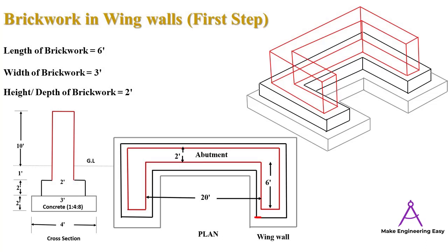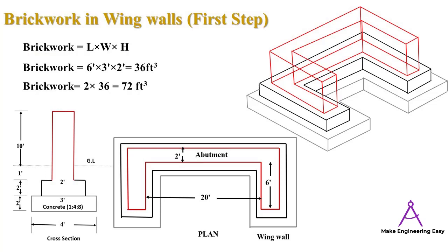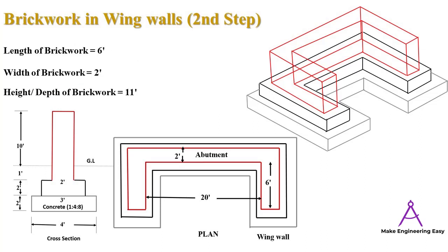Similarly, for the brickwork in wing walls in the first strip, we need the length, width, and height of the brickwork. Multiplying length × width × height at the first stage gives the brickwork in the first strip equal to 36 cubic feet for one wing wall. Multiplying by two for both wing walls gives a total quantity of 72 cubic feet.